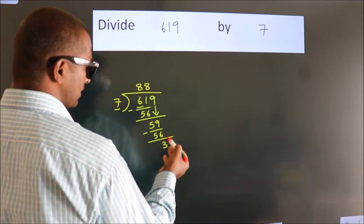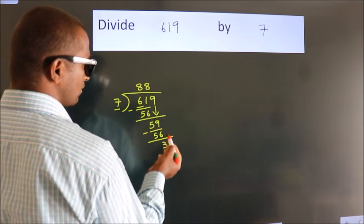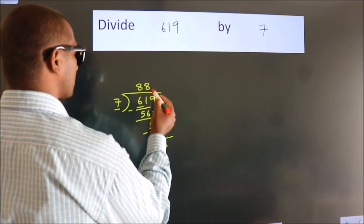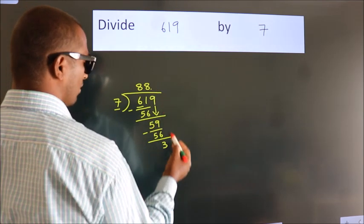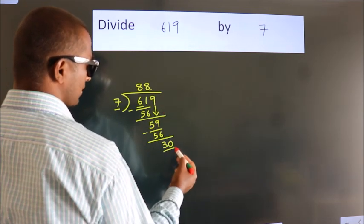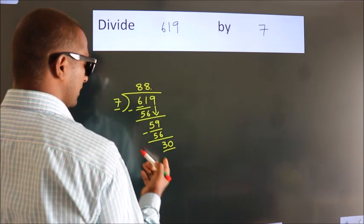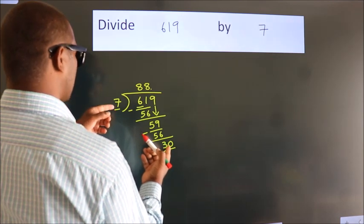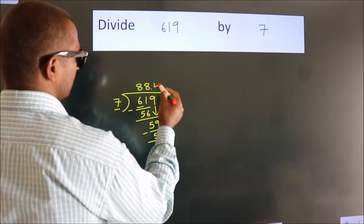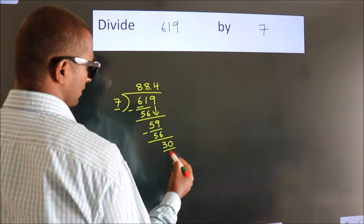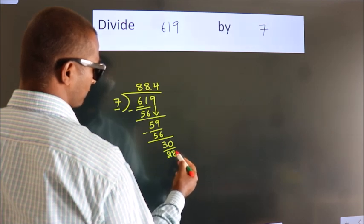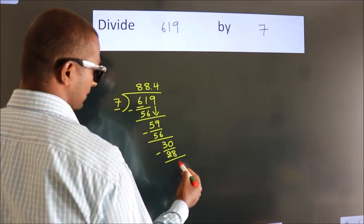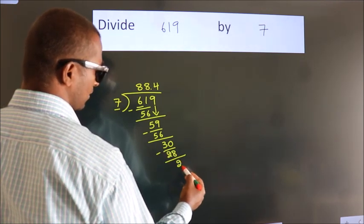After this, there are no more numbers to bring down. So what we do is put a dot and take 0, making it 30. A number close to 30 in the 7 table is 7 × 4 = 28. Now we subtract and we get 2.